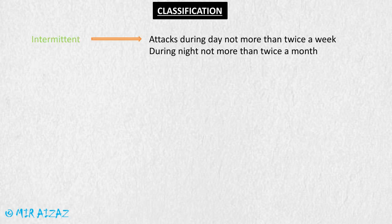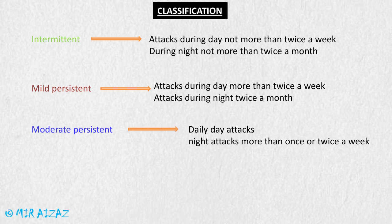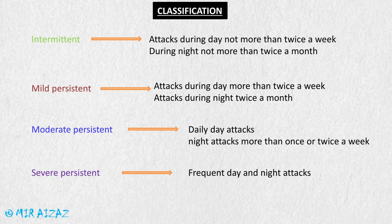The classification of asthma has four classes. In intermittent asthma, attacks occur during the day no more than twice a week and during the night no more than twice a month. In mild persistent asthma, daytime attacks occur more than twice a week and nighttime attacks twice a month. In moderate persistent asthma, there are daily daytime attacks and nighttime attacks more than once a week. In severe persistent asthma, there are frequent day and night attacks.